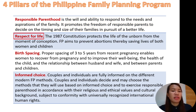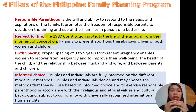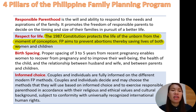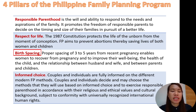Next is respect for life. The 1987 constitution protects the life of an unborn from the moment of conception — from the moment the sperm fertilizes the egg cell, that is the moment of conception, and the 1987 constitution already protects life from that moment. So family planning aims to prevent abortions, thereby saving lives not only of children but also of mothers, since abortion can become septic or infectious. Next pillar is birth spacing — proper spacing of three to five years from the recent pregnancy will enable the woman to recover and improve their well-being, the health of the other child, and the relationship between husband and wife.